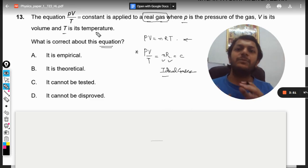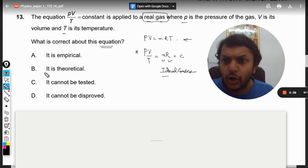But now the question is saying that this equation, that PV by T is equal to constant, is applied on real gases. Now that's really ironic because that's a mistake. We cannot apply this equation to the real gases.